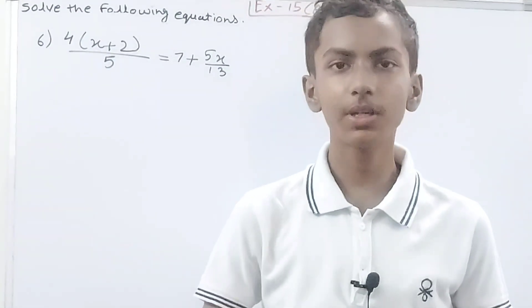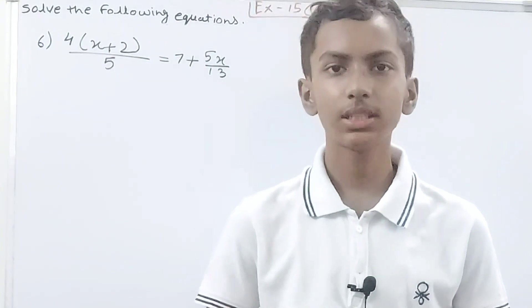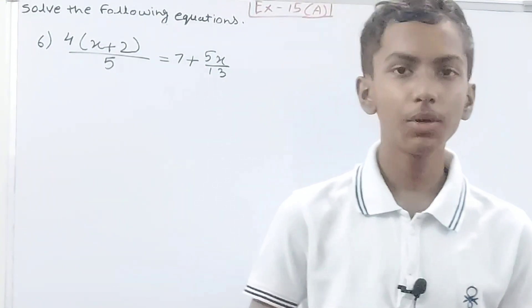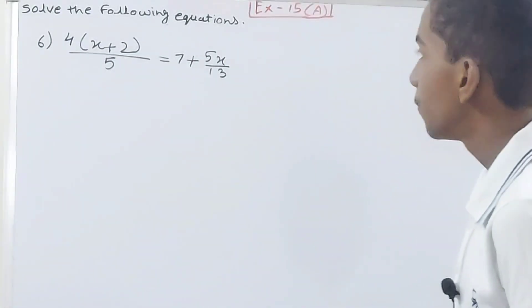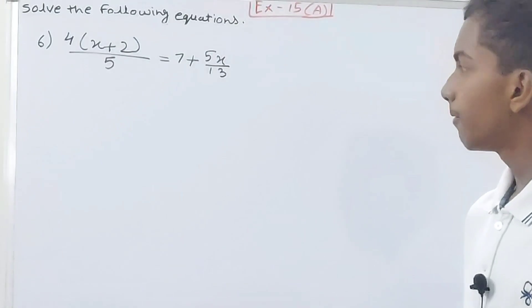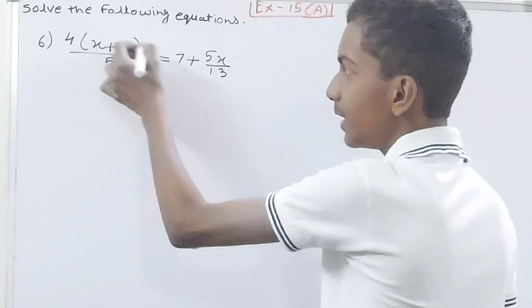Hello friends, welcome back to my YouTube channel Local Learning. In this video we are going to solve ICSE Mathematics Class 8 Chapter 15 Linear Equations Exercise 15, equation number 6. This is 4(x+2)/5 = 7 + 5x/13. First step in such type of equations is to open the bracket.